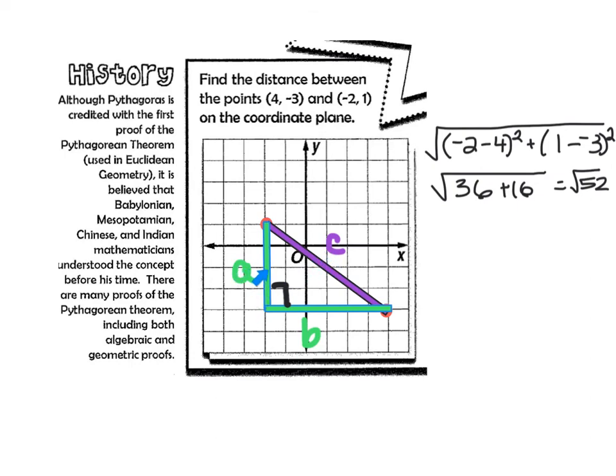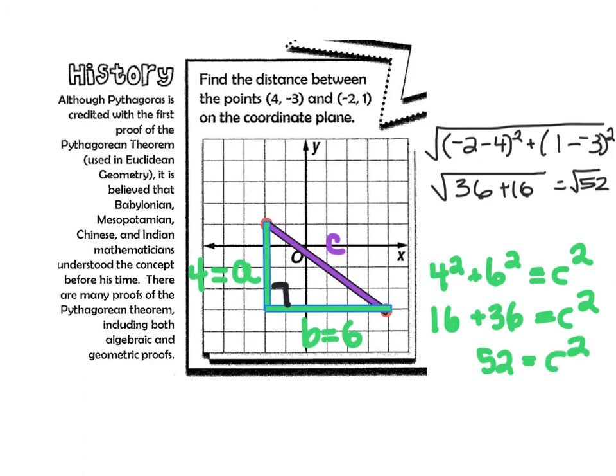If I look, A is 1, 2, 3, 4 units long. And B is 1, 2, 3, 4, 5, 6 units long. So, I'm going to do A squared plus B squared equals C squared. So, 16 plus 36 equals C squared. 52 equals C squared. If I were to take my square root, I find out that C is the square root of 52. The same answer I get when I do it with the distance formula. So, you choose which way would you prefer to do it.